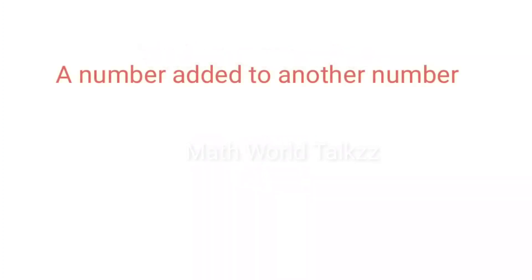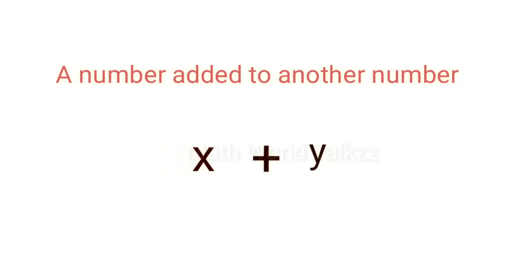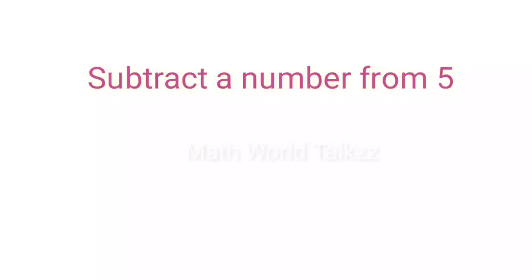The next question: 'a number added to another number.' Here we need two variables, so we can take two letters — let it be x and y. We want to add these variables, so the answer is x plus y. Next: 'subtract a number from 5.' We write 5 first, then 5 minus any variable — we can take x — so the answer is 5 minus x.